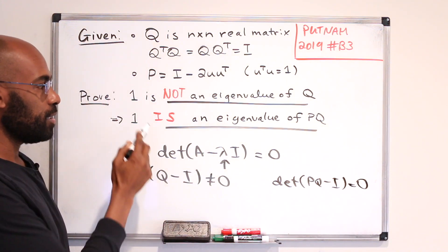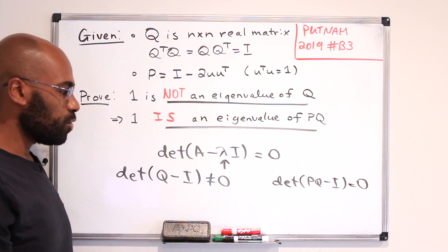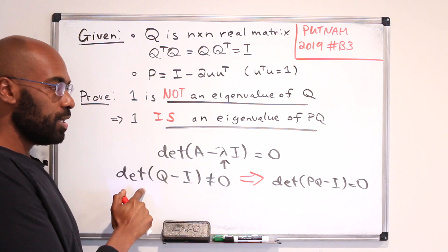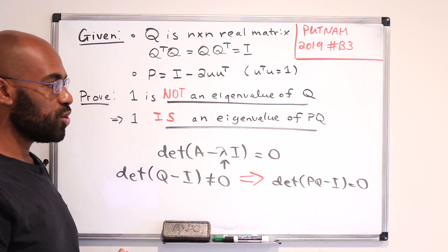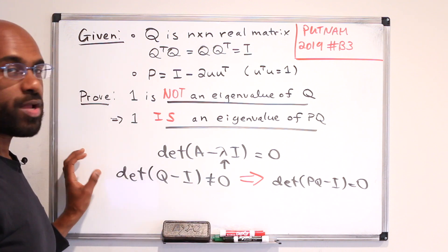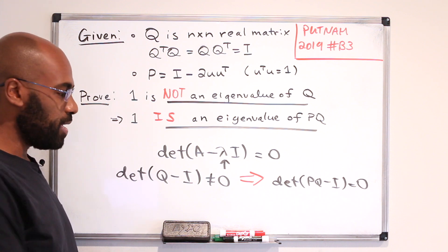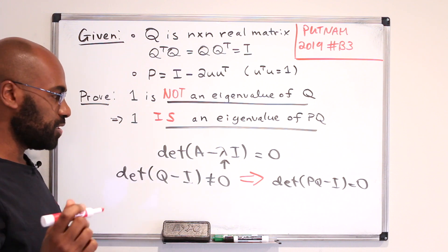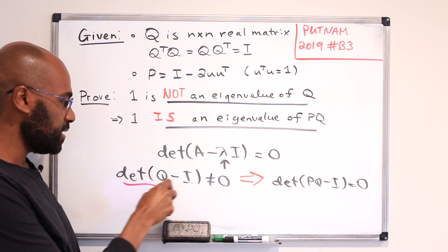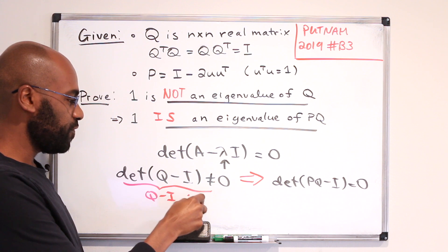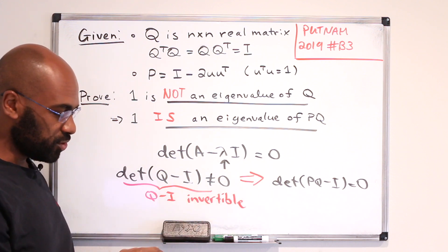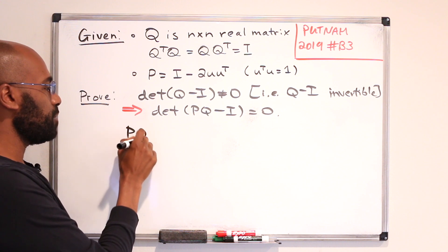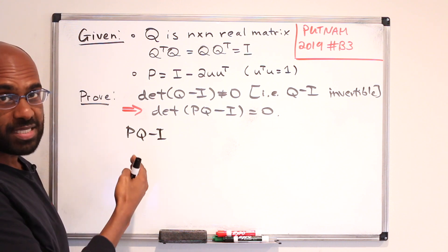So what we want to prove is that the determinant of Q minus I being non-zero implies that the determinant of PQ minus I equals zero. We can rephrase this further: a matrix having a non-zero determinant means it's invertible. So equivalently, Q minus I is invertible implies the determinant of PQ minus I is zero.